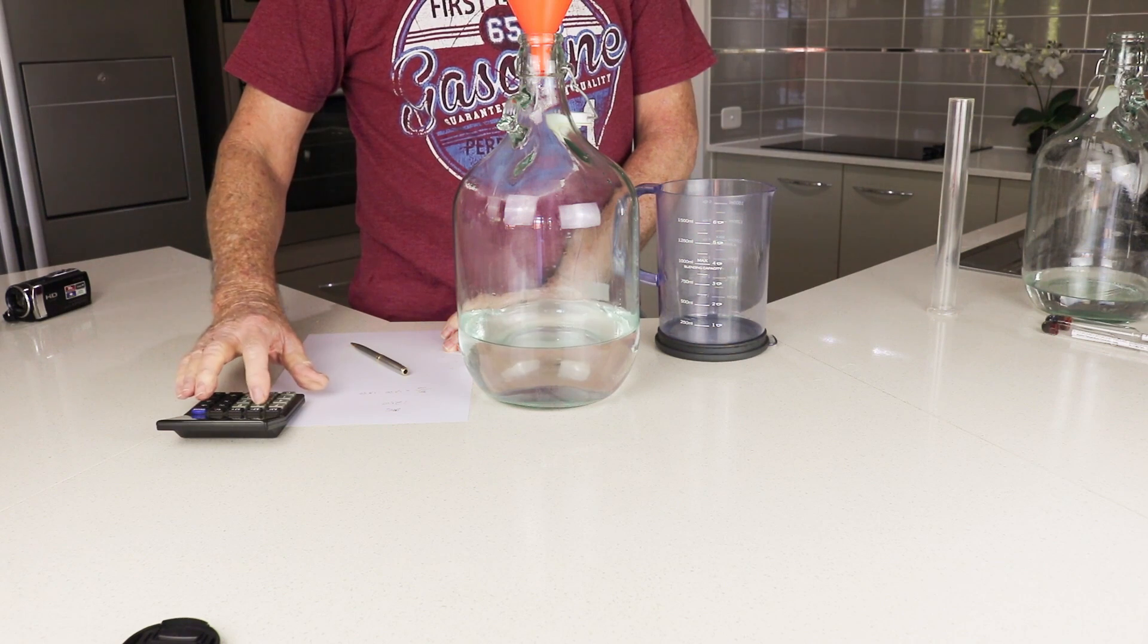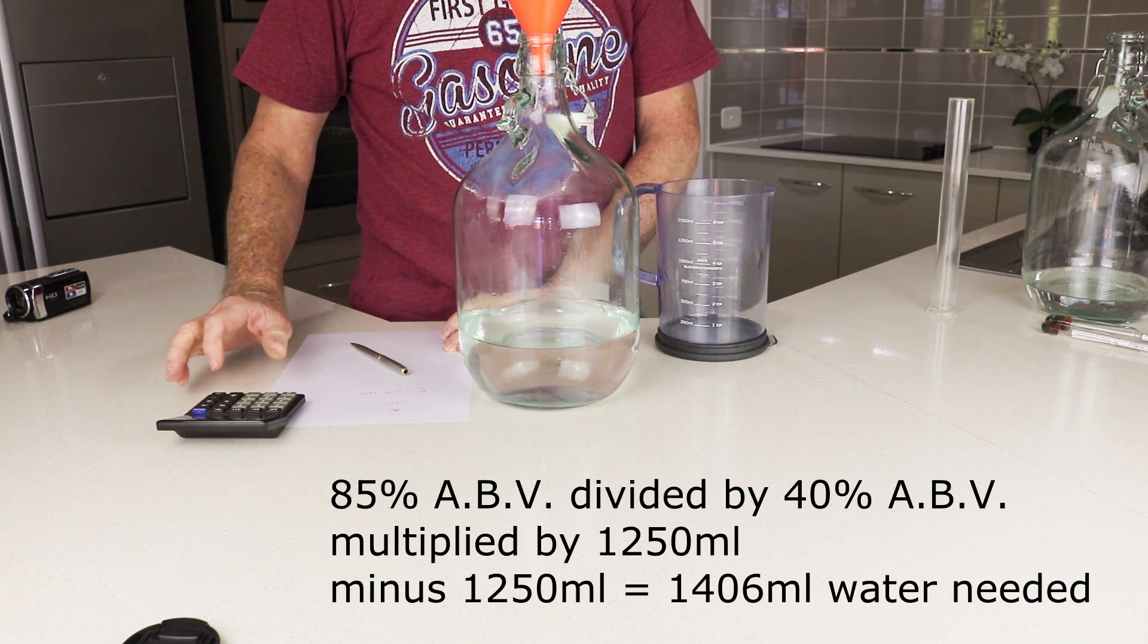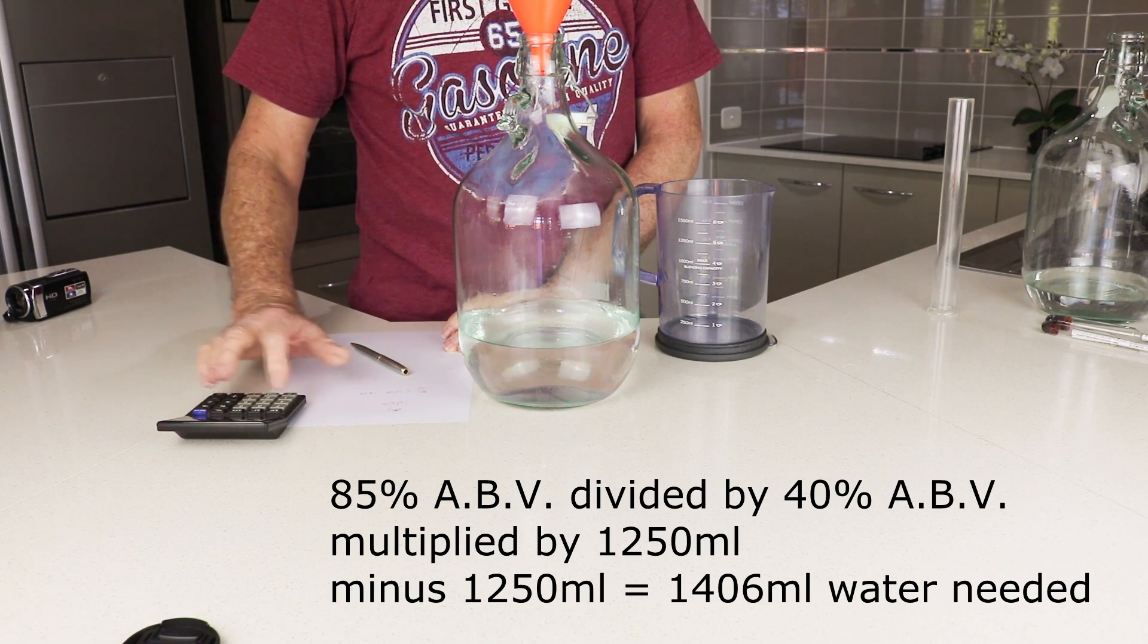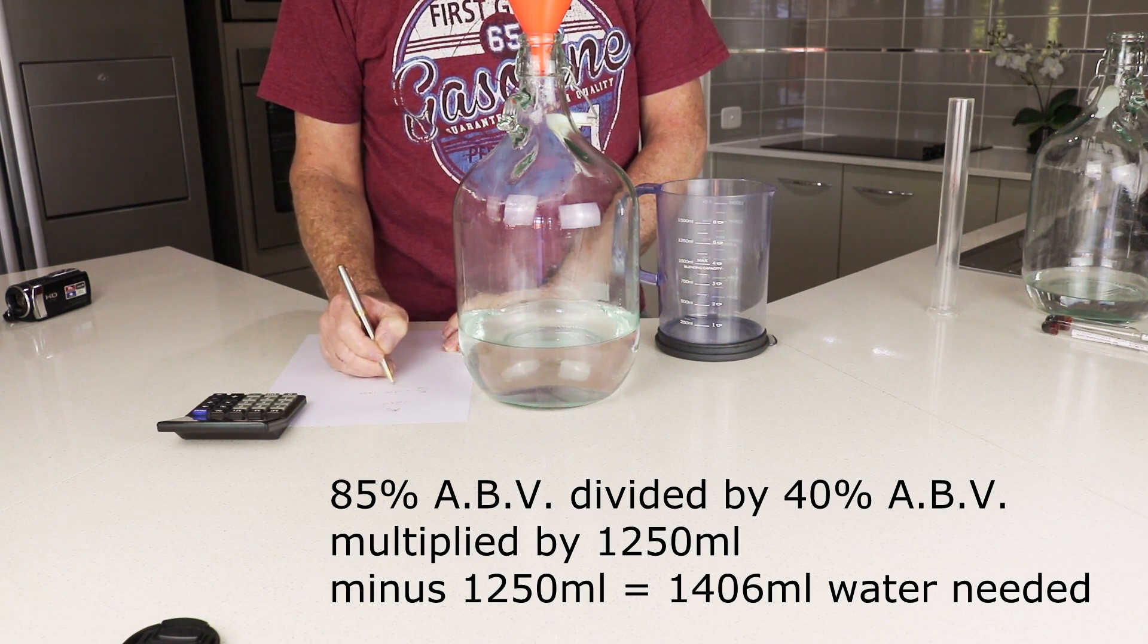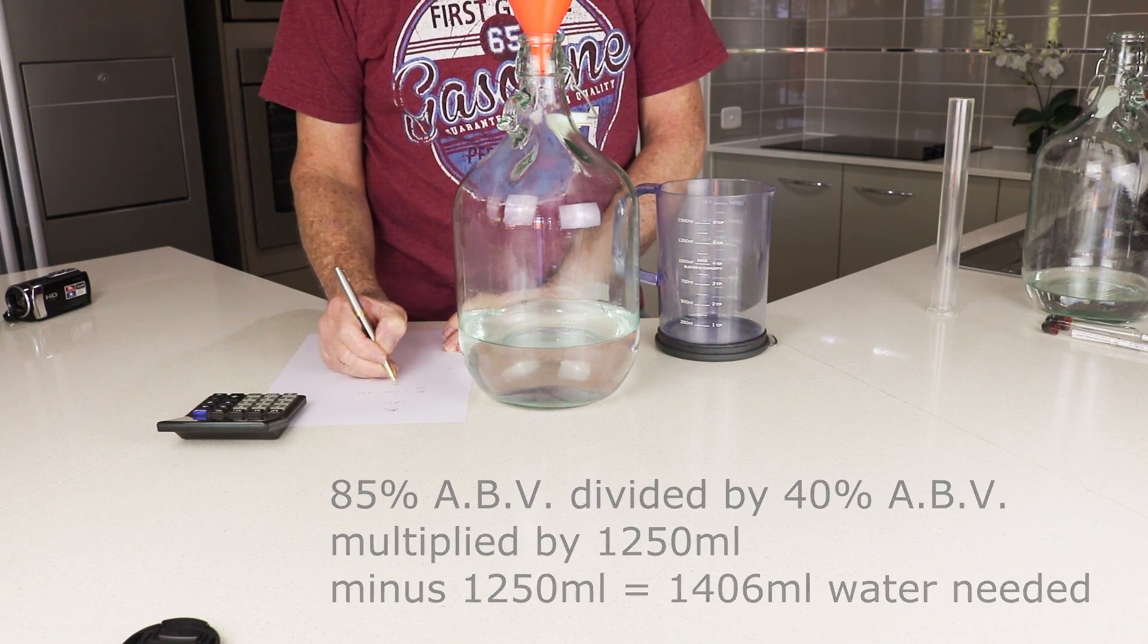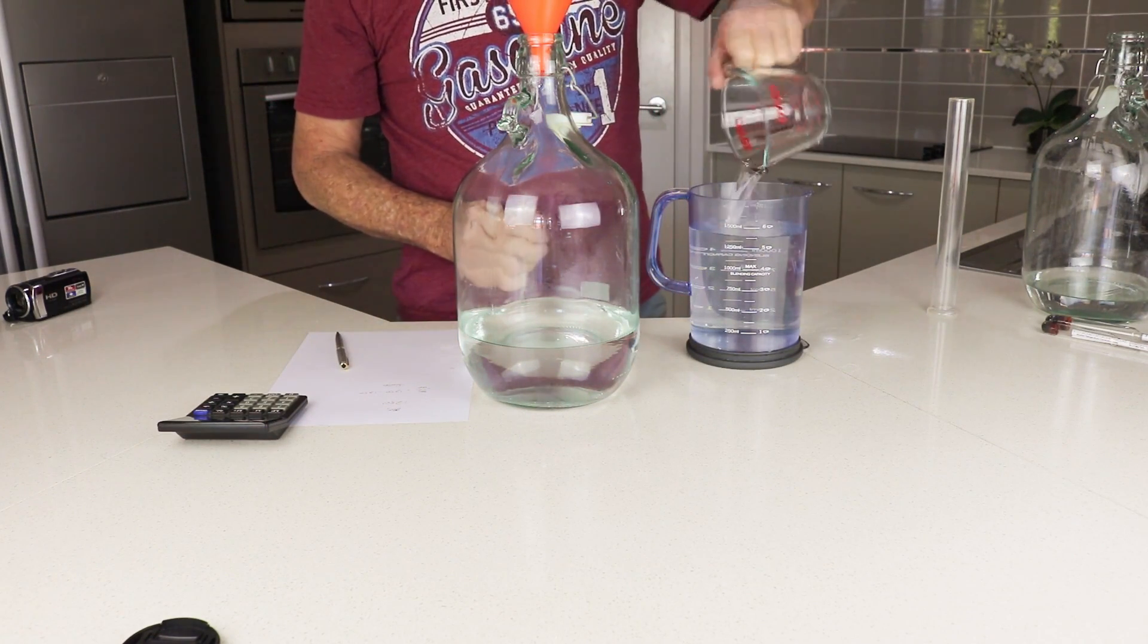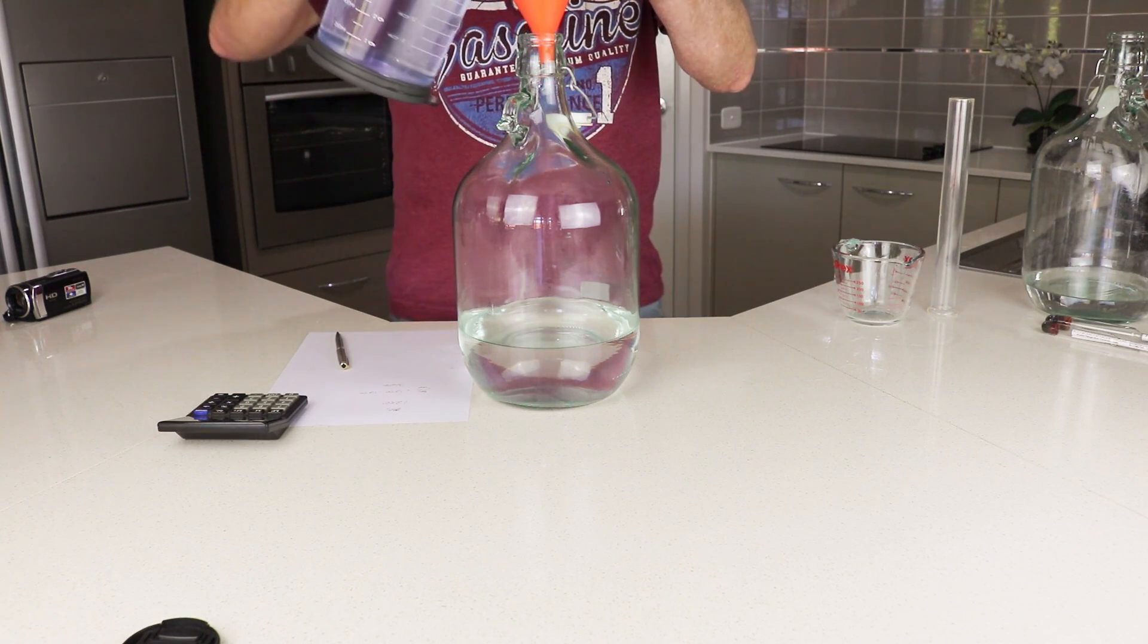Here's the sum in a different perspective. 85% alcohol by volume divided by 40, multiplied by 1250ml, minus 1250ml. That gives us 1.406 liters of water that we need to add to bring it down to 40% alcohol by volume.